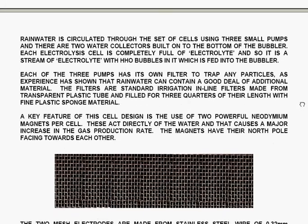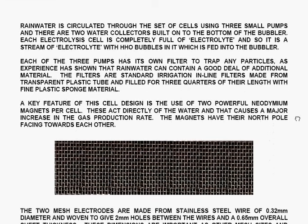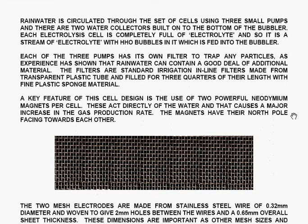Rain water is circulated through the set of cells using three small pumps and there are two water collectors built onto the bottom of the bubbler and each electrolysis cell is completely full of so called electrolyte and so it is a stream of electrolyte with HHO bubbles in it which is fed into the bubbler.